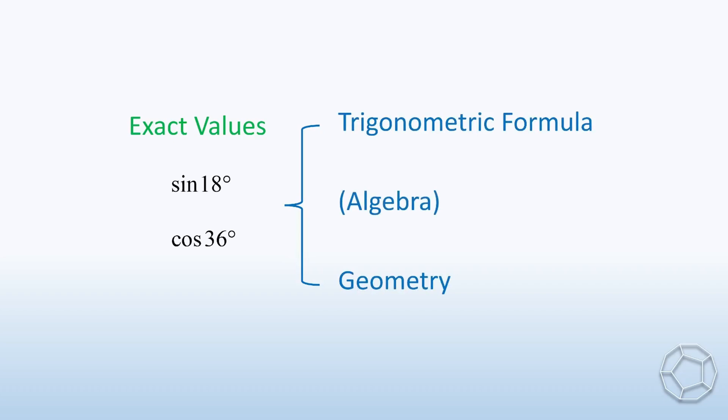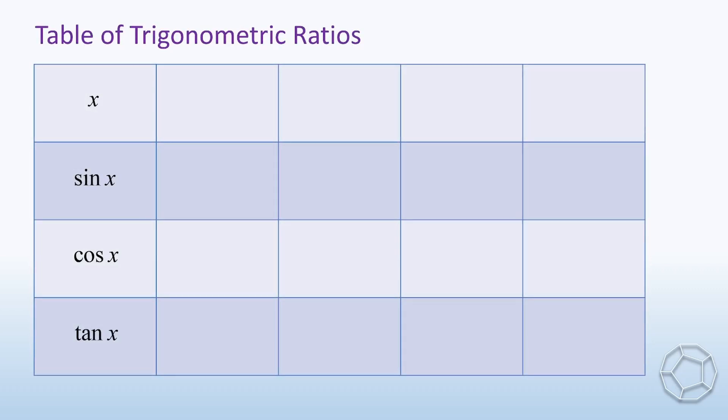In this video, we will find the exact values of sine 18 degrees and cosine 36 degrees by trigonometric formula and geometry. I will make use of a special trick in algebra as well. As a bonus, I will also show you a complete table of trigonometric ratios of 18 degrees, 36 degrees, 54 degrees, and 72 degrees, and the way to work them out.